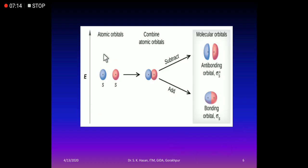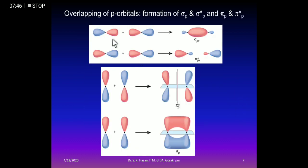We can also represent this as: when an s orbital and another s orbital combine, a bonding sigma orbital and an anti-bonding sigma* orbital form. The bonding MO is denoted σs and the anti-bonding MO is denoted σ*s. For p orbitals, there are three: px, py, and pz. When px and px undergo head-on overlapping, a sigma bond forms.